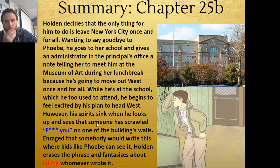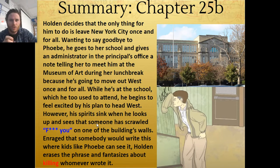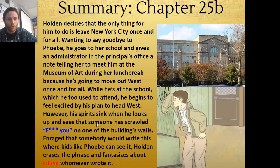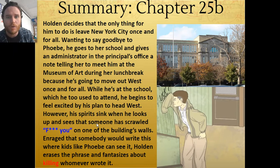Chapter 25 continues — this is a longer chapter right near the end of the book. Holden decides to leave New York City once and for all. While he's at the school, which he used to attend, he begins to feel excited by his plan to head west. However, his spirits sink when he looks up and sees that someone has scrawled an F-U on one of the building's walls. Enraged that somebody would write this where kids like his innocent sister Phoebe could see it, Holden erases the phrase, trying to rub it out, and he fantasizes about killing whoever wrote it.